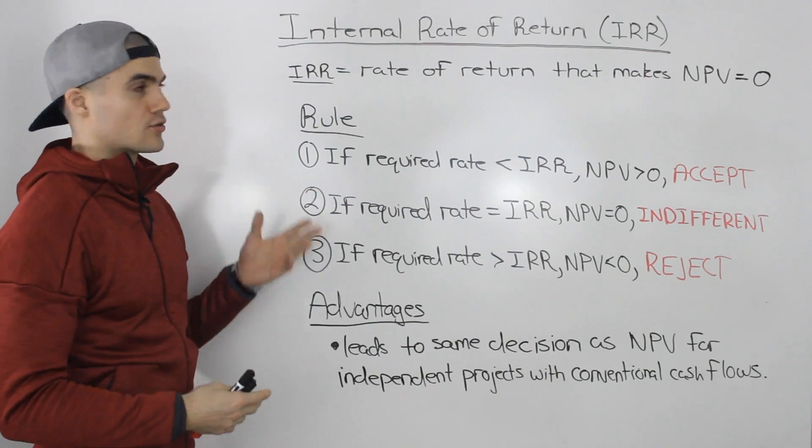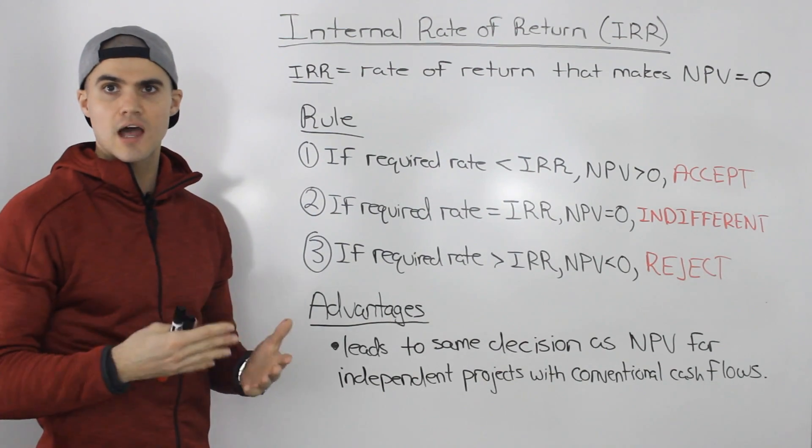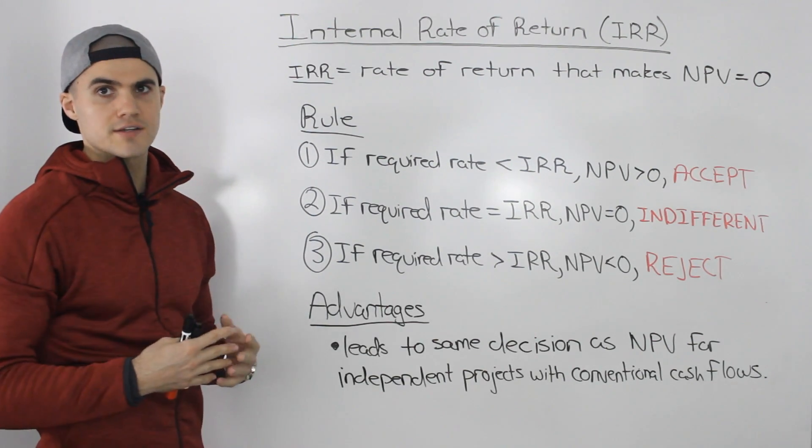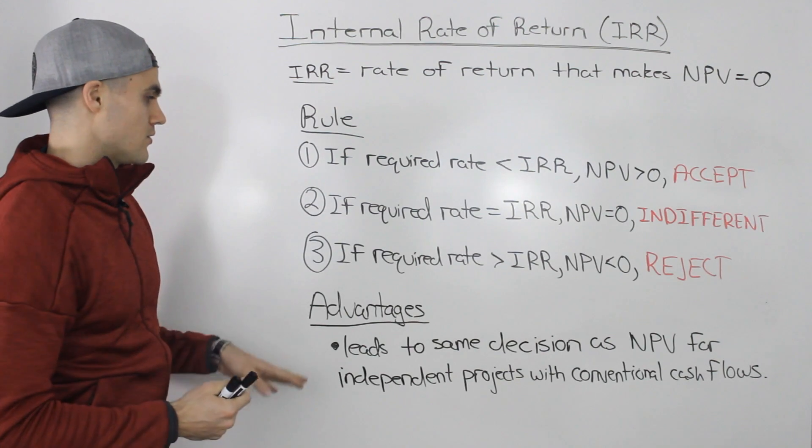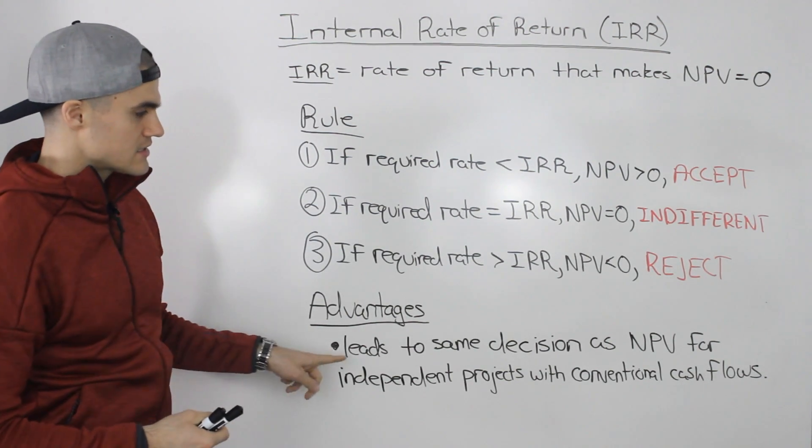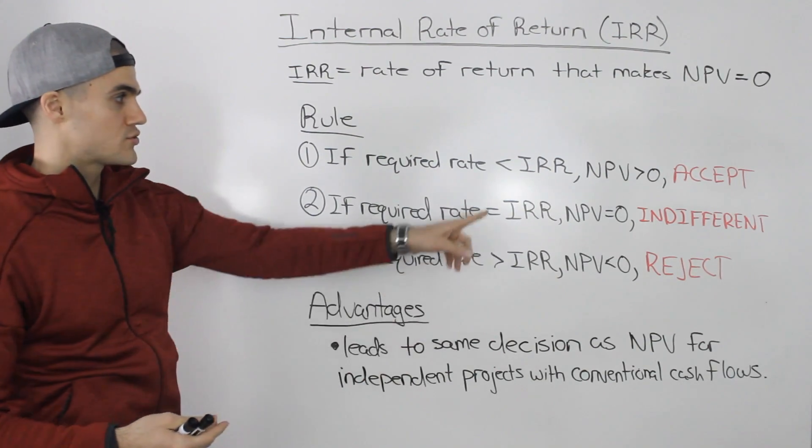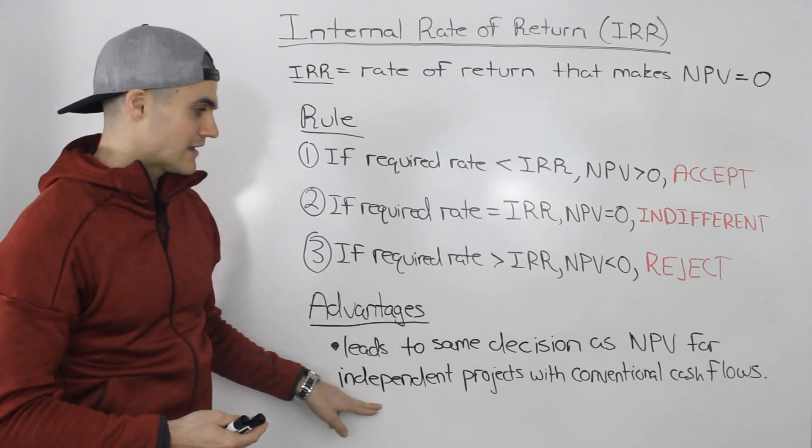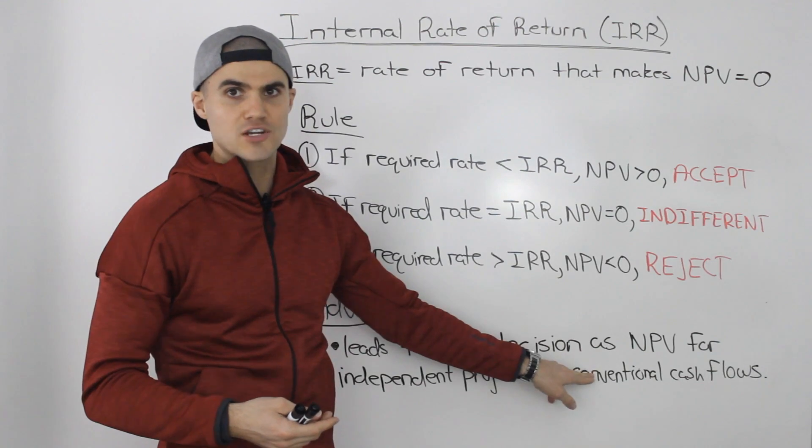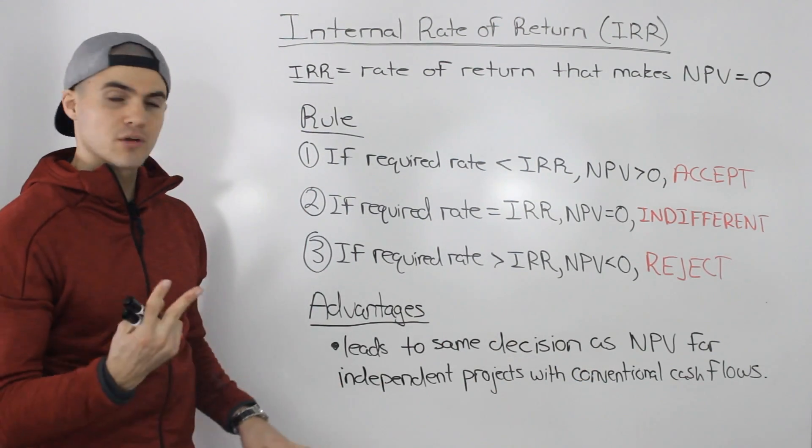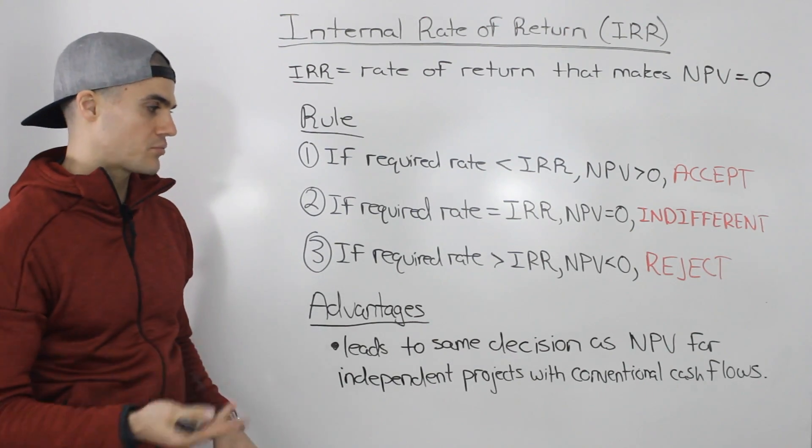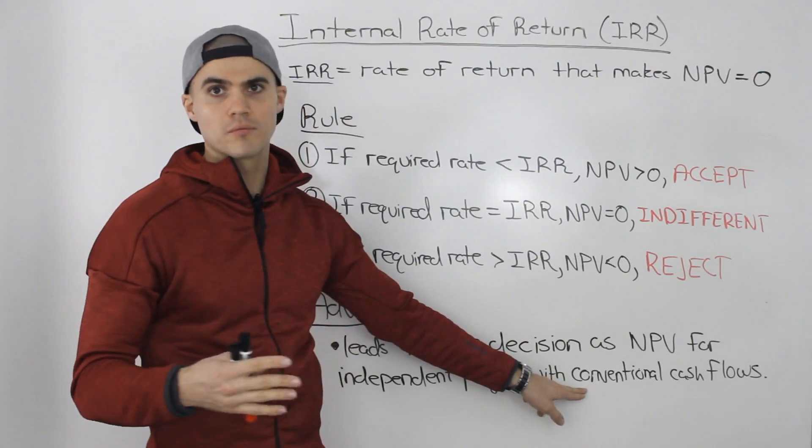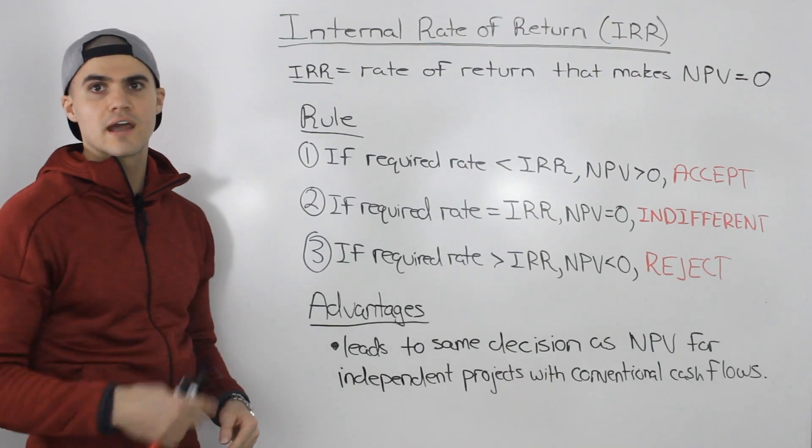Now the big advantage of using the internal rate of return is that it's very closely tied to the NPV, and we've always said that the NPV is the golden rule for investment criteria. It's always the best one to use. So the IRR, the internal rate of return, it leads to the same decision as an NPV of whether to accept or reject a project. But the project has to be independent and it has to have conventional cash flows. So if you're comparing two projects and they're mutually exclusive, some problems may arise. Also if the cash flows are unconventional, then other problems may arise as well. So we'll go through those problems in the next video.